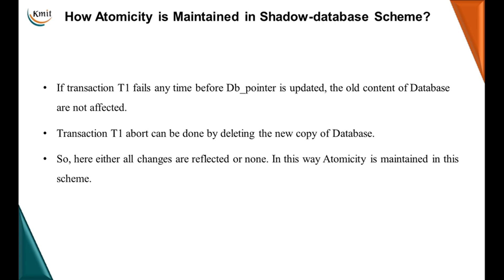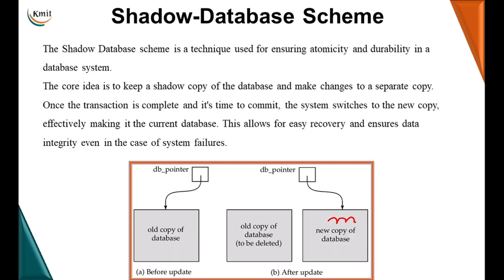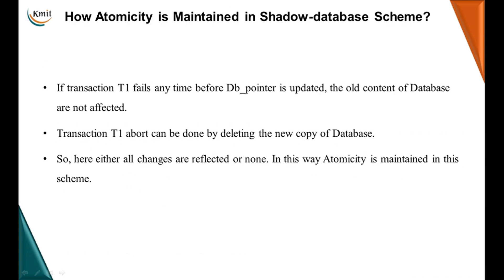How is atomicity maintained in the shadow database scheme? Assume the transaction fails at any time before the db pointer is updated. The old content of the database is not affected at all. When the system restarts, it will only see the old copy, since the db pointer is still pointing to the original database content. T1 can abort simply by deleting the new copy. So either all changes are reflected or none of them — atomicity is maintained.